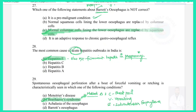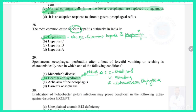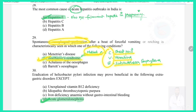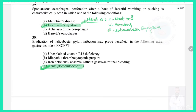Question 28: Most common cause of acute hepatitis outbreak in India — the answer is hepatitis E, which also causes fulminant hepatitis in pregnancy. Question 29: Spontaneous esophageal perforation after bouts of forceful vomiting or retching is characteristic of Boerhaave syndrome. Its features include the Mackler triad: chest pain, vomiting, and subcutaneous emphysema occurring after esophageal perforation.